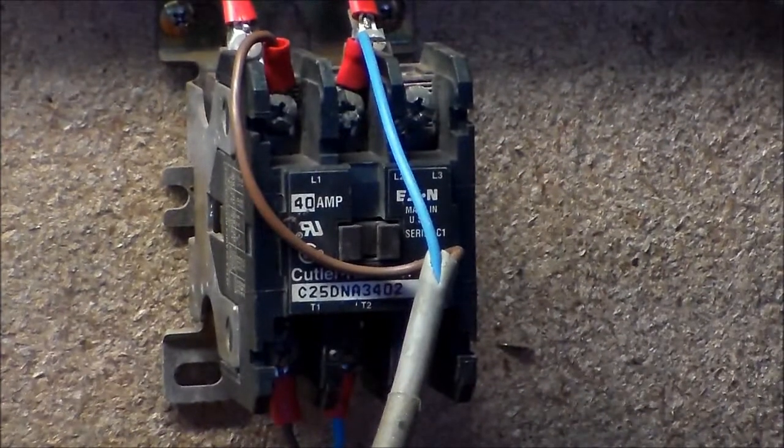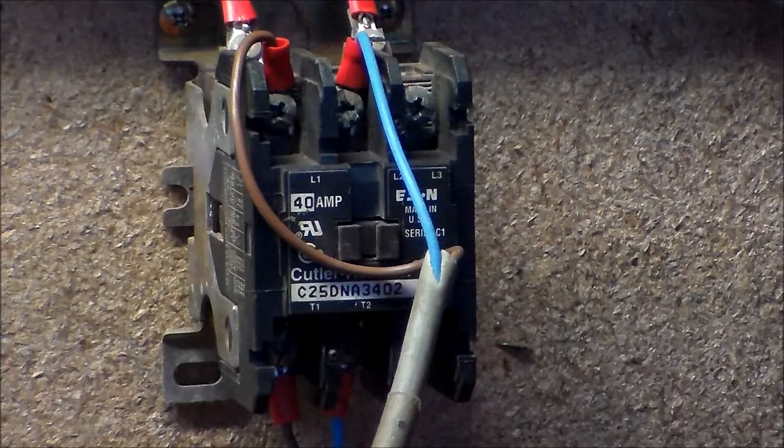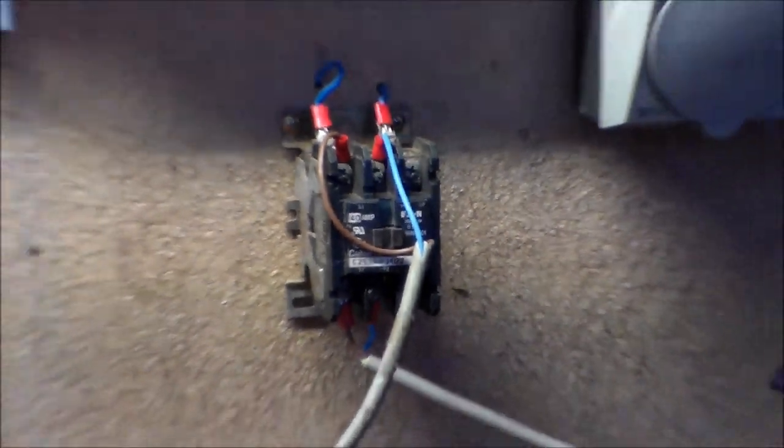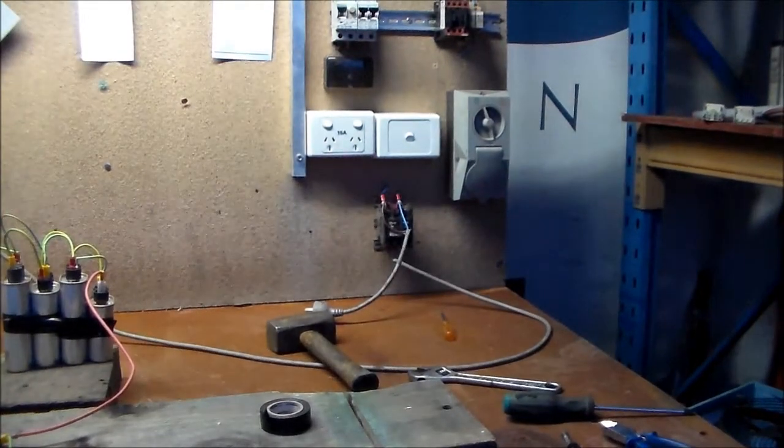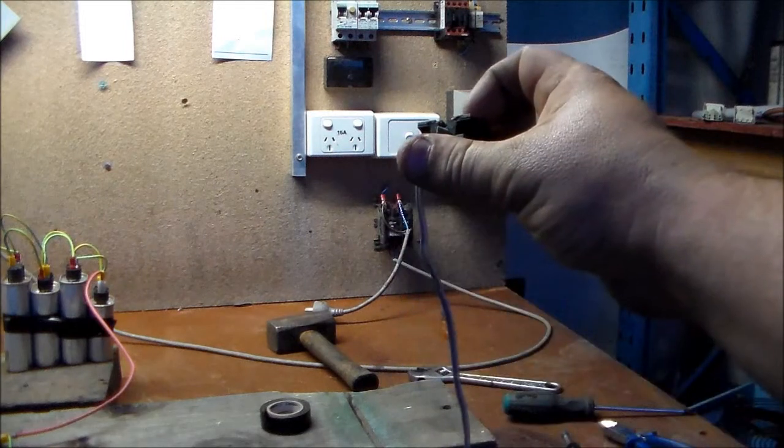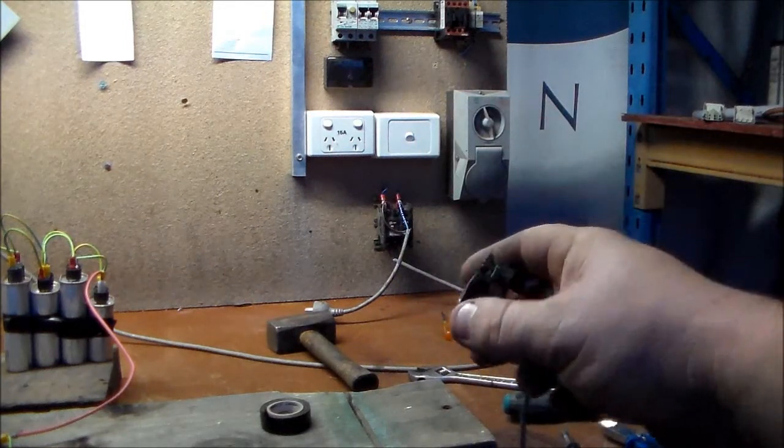So obviously when I want to energize the circuit I have to be pressing the button. Now what I've used to switch is just a normal little toggle on-off normally open switch. Just like that. And it's all wired up. Now this only carries 24 volt AC, so I can't really get in trouble with that.